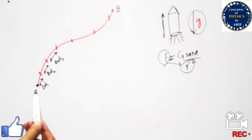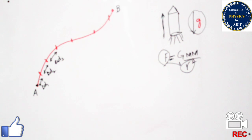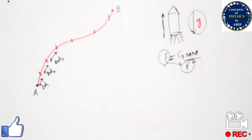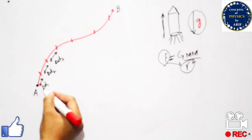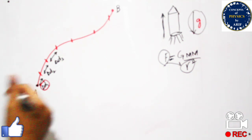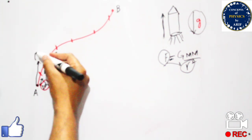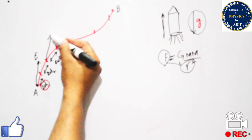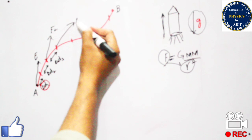Let us consider a case where work is calculated in the region A to B. As you can see, this is not a constant or straight line, so we cannot generalize its formula directly. In order to calculate the total work between point A and point B, we divide this interval into small intervals, each with displacement Δd₁, Δd₂, Δd₃, and at each point a force component is applied: F₁, F₂, F₃, and so on.